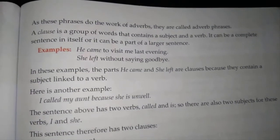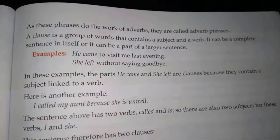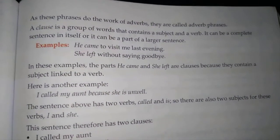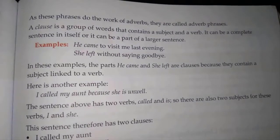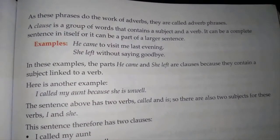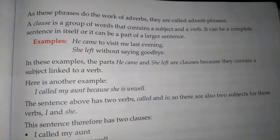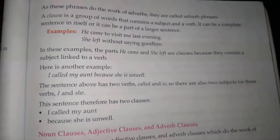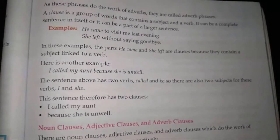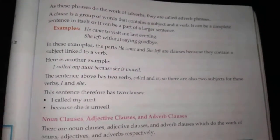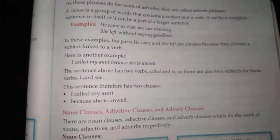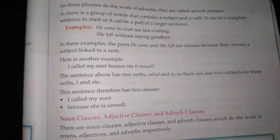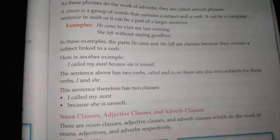Here is another example: 'I called my aunt because she is unwell.' The sentence above has two verbs — 'called' and 'is' — and two subjects — 'I' and 'she.' This sentence therefore has two clauses: 'I called my aunt' and 'because she is unwell.'